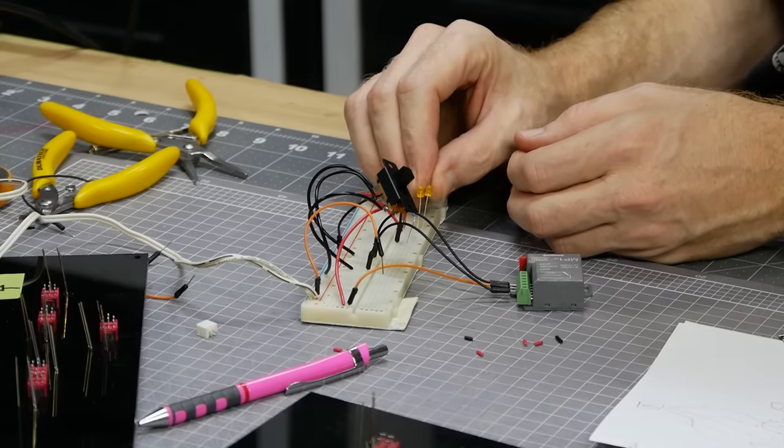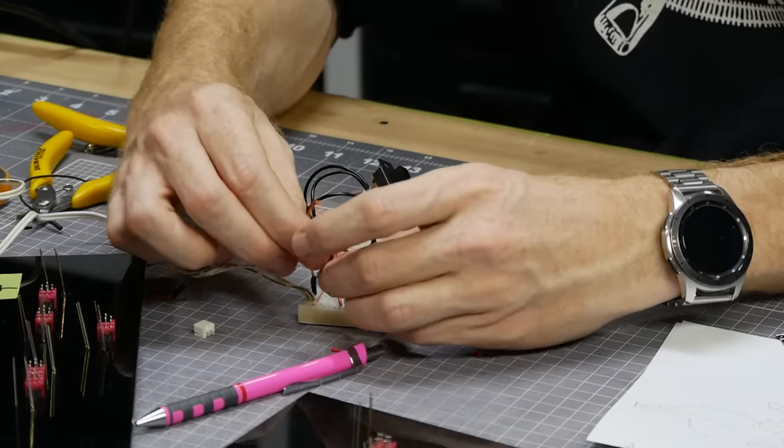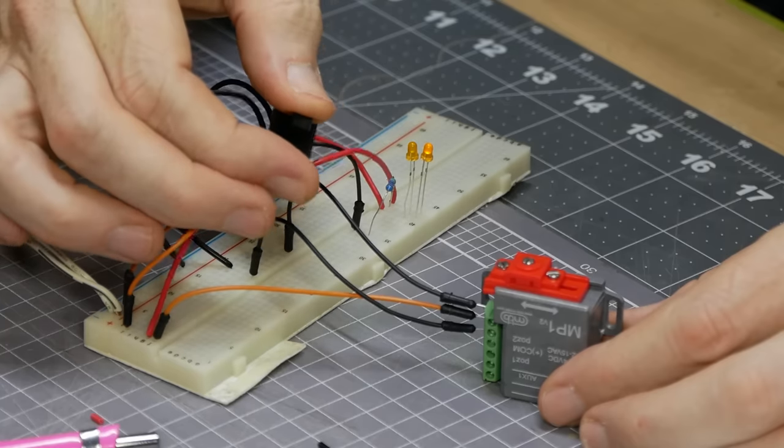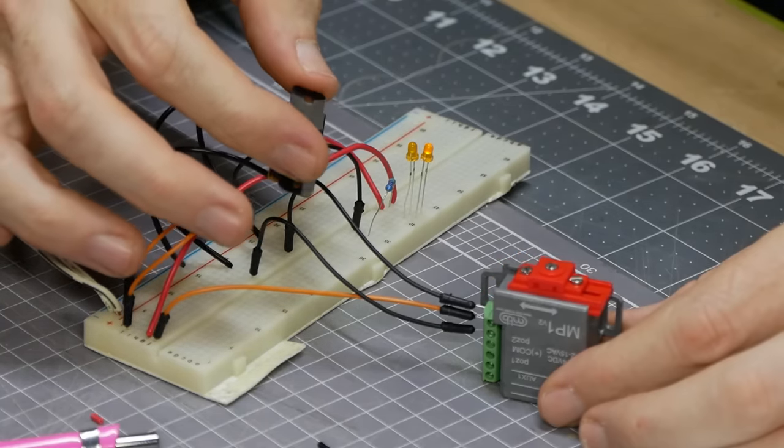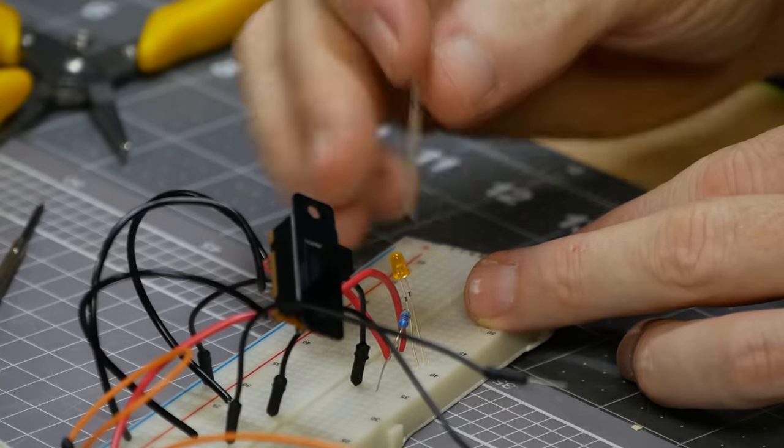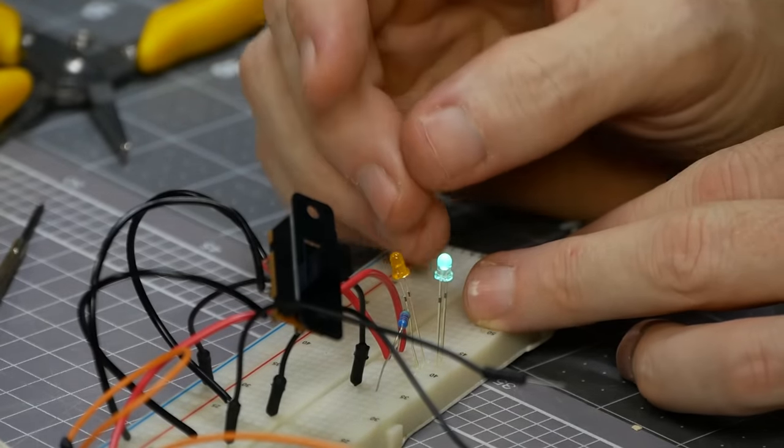When it comes to wiring I think it's always a good idea to do a test using a breadboard. That way you can experiment with various resistors and LEDs to get the exact look and brightness you want without committing to soldering just yet.